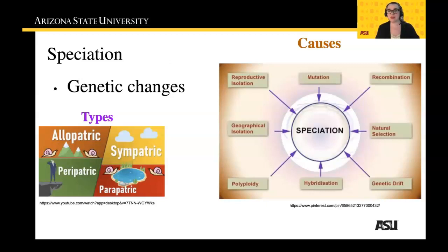One mechanism is reproductive isolation. Another is through genetic mutations or genetic recombinations. Also, natural selection and adaptation play a role, and genetic drift can play a role. Hybridization with other organisms is another mechanism, and then polyploidy — which we'll discuss mostly with regard to plants — and geographical isolation.